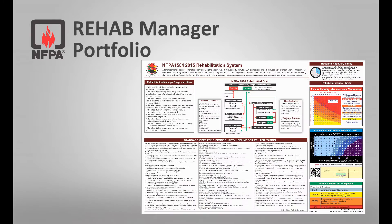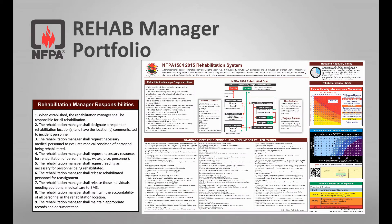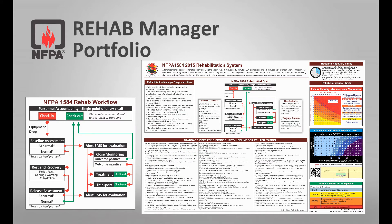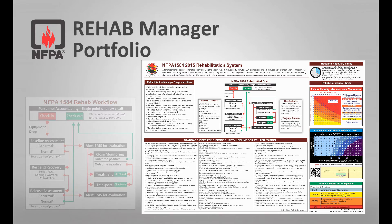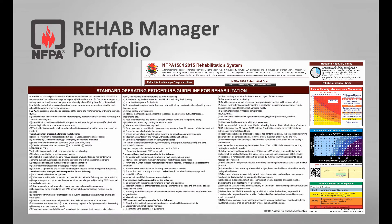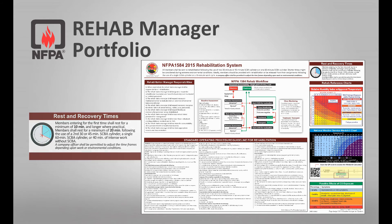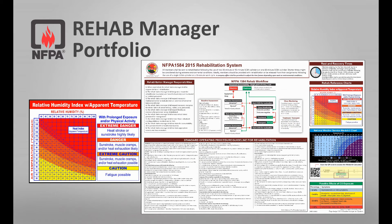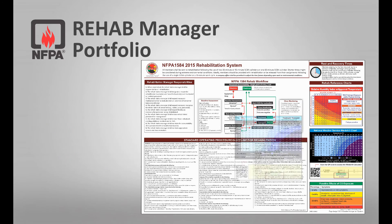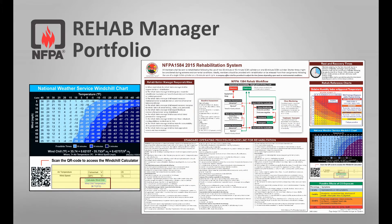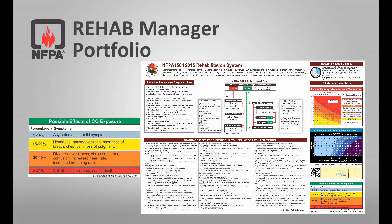The upper reference sheet includes the rehab manager's job action sheet with position responsibilities and priorities, a workflow diagram to ensure rehab area sections are properly established, the entire 1584 guideline to serve as a reference and learning tool for new and veteran rehab managers, a timer chart for recommended rest and recovery periods, a relative index chart to determine apparent temperatures at a glance, a national windchill chart and calculator for cold environments, and a CO side effects diagram to assist rehab personnel with CO poisoning symptoms based on percentage.